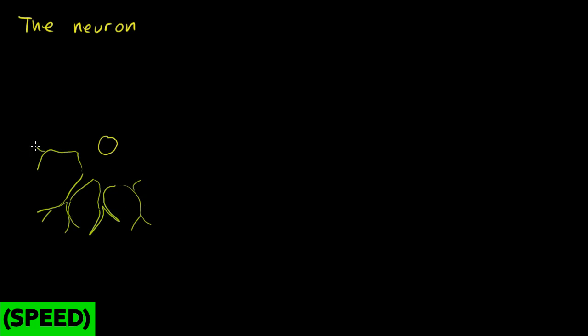Maybe they look something like this. I don't want to spend too much time just drawing the neuron, but you've probably seen drawings like this before. And these branches off of the soma of the neuron, off of its body, these are called dendrites.